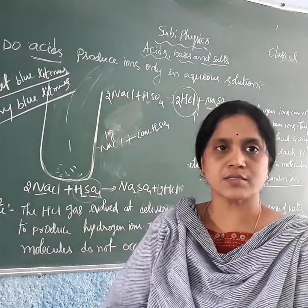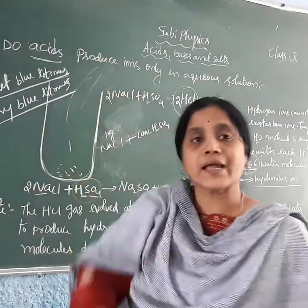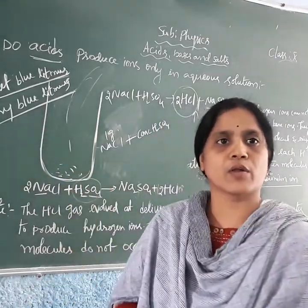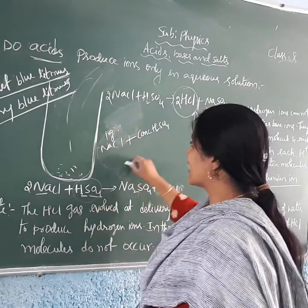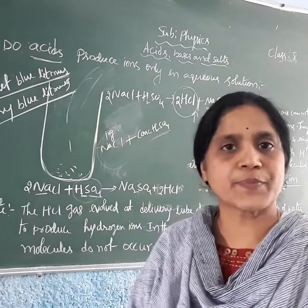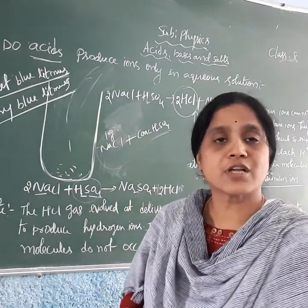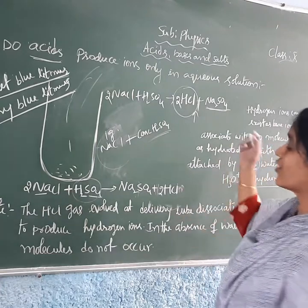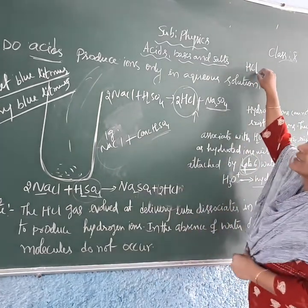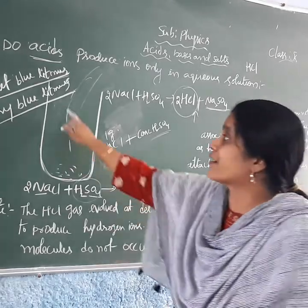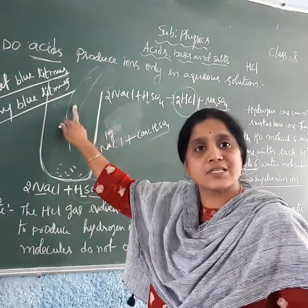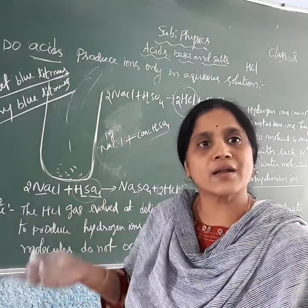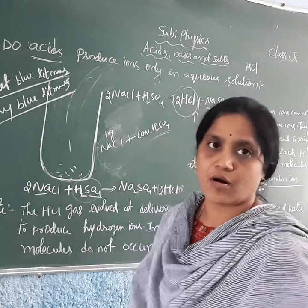You can observe that there is a color change in the wet blue litmus paper, but no change in the dry blue litmus paper. Why? Because the wet blue litmus paper contains water molecules, while the dry litmus paper does not. From this, we understand that any acid contains H⁺ ions only in the presence of an aqueous solution.